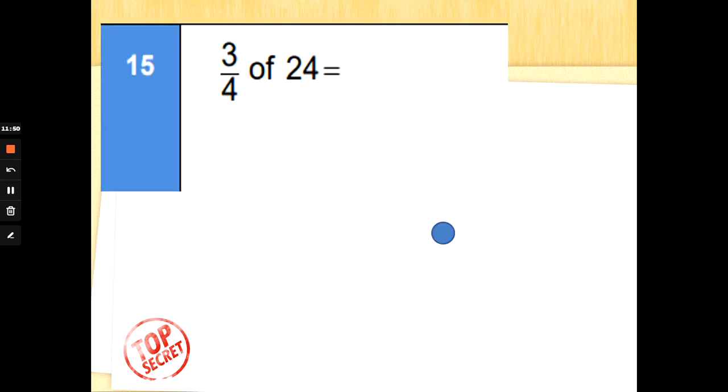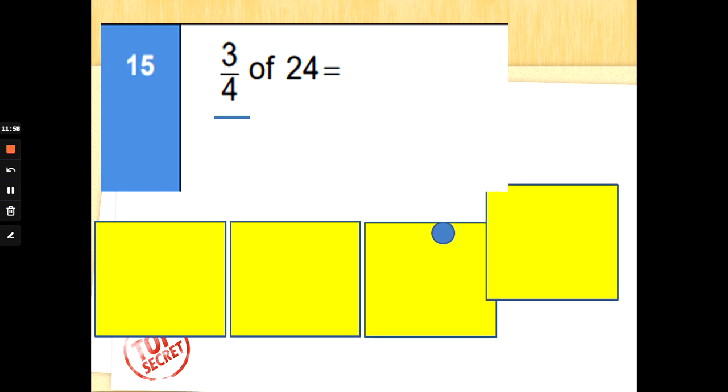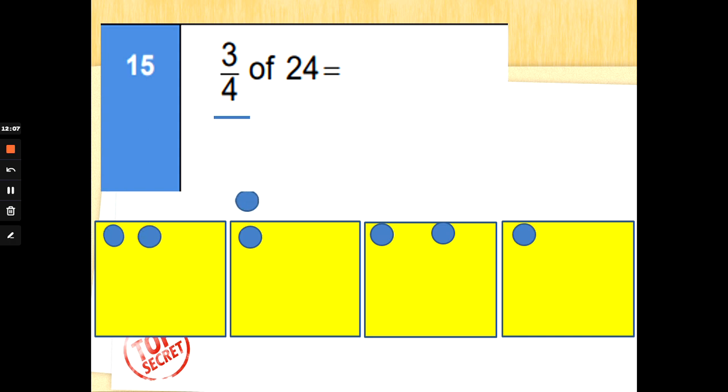Let's try another challenge. 3/4 of 24. So, first of all, ignore the 3 for now. Look at the bottom number. We need to draw 4 boxes and we need to split 24 equally first. Let's get that done first: 1, 2, 3, 4, 5, 6, 7, 8, 9, 10, 11, 12, made it equal again, 13, 14, 15, 16, 17, 18, 19, 20, nearly there, 21, 22, 23, 24.